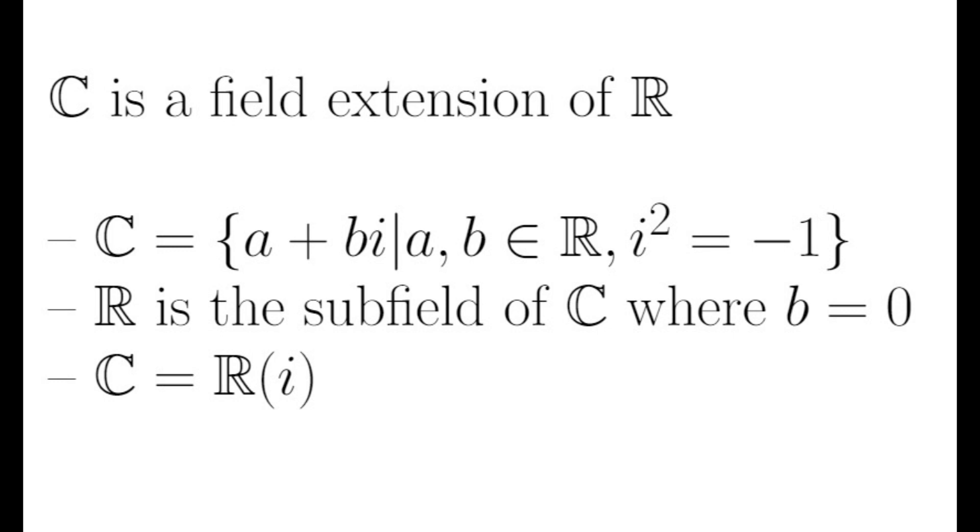Furthermore, C can be thought of as R with the number i adjoined, and it is written as C equals R with the i in parentheses. If a field extension can be expressed in this way, it is called a simple extension, and the number i is the generator.